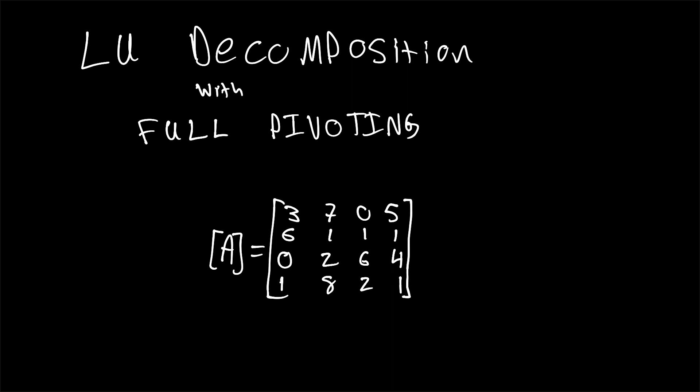We're going to be taking a look at LU decomposition — decomposition to lower and upper matrices — using a method that involves full pivoting. What we're going to be using is the Gauss elimination method with full pivoting. Essentially, the Gauss elimination method is a set of row operations in order to decompose the matrix to give an upper matrix, and the factors used on each element of the rows form a lower matrix. We're going to be using the same matrix as in my previous video, in which we derived LU decomposition simply by using direct formulae.